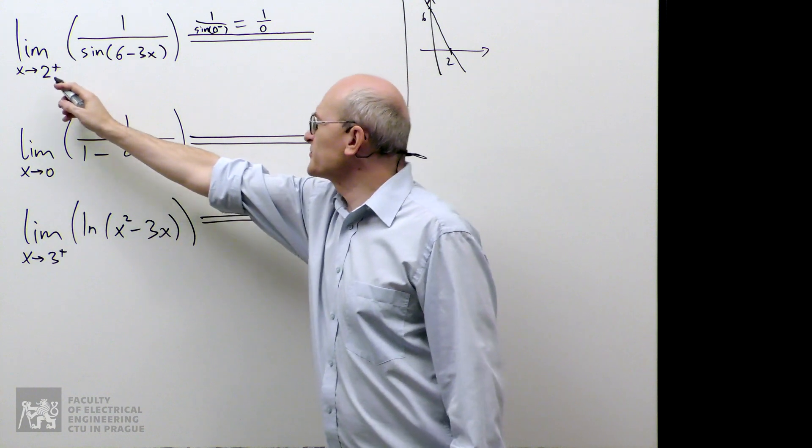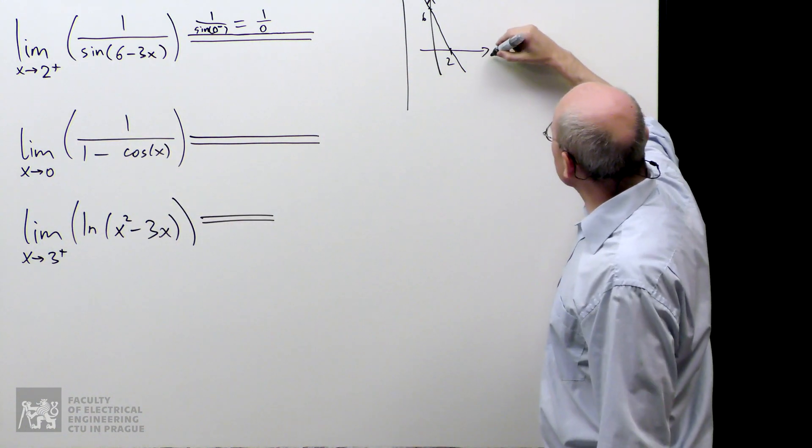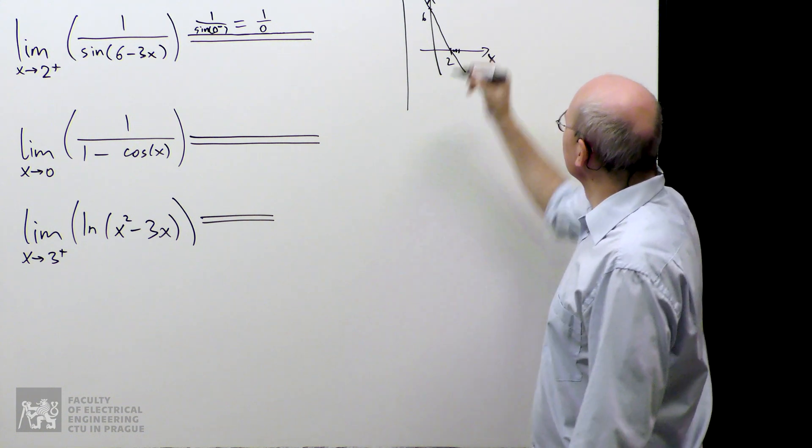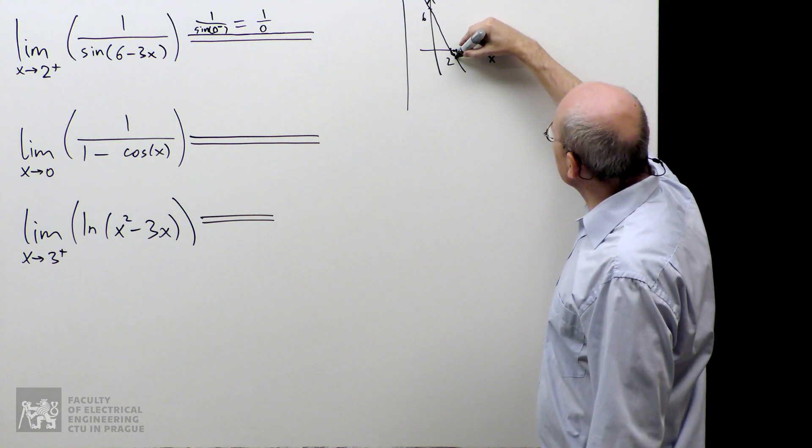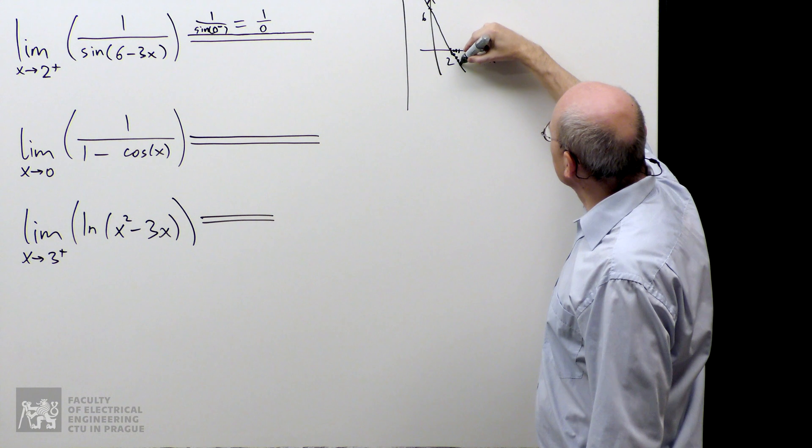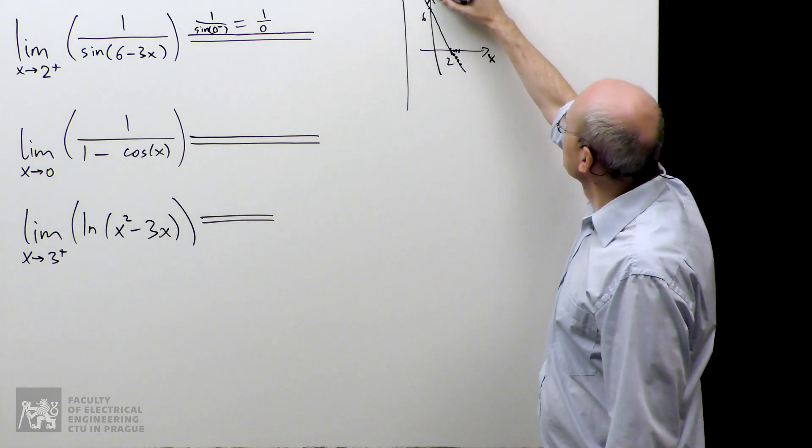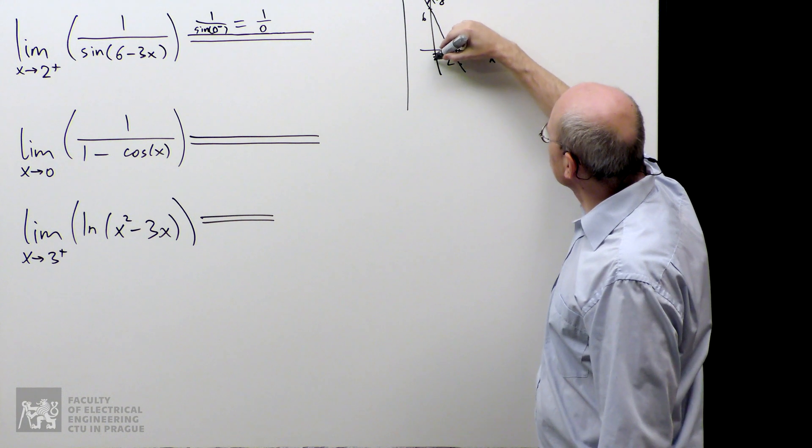So that's the graph of that function. Now, when I'm approaching 2 from the right, I'm taking numbers here to the right of 2. And when I look at the graph, that's the place where the values are. But we actually see them on the y-axis. We see them over here. That's the values.